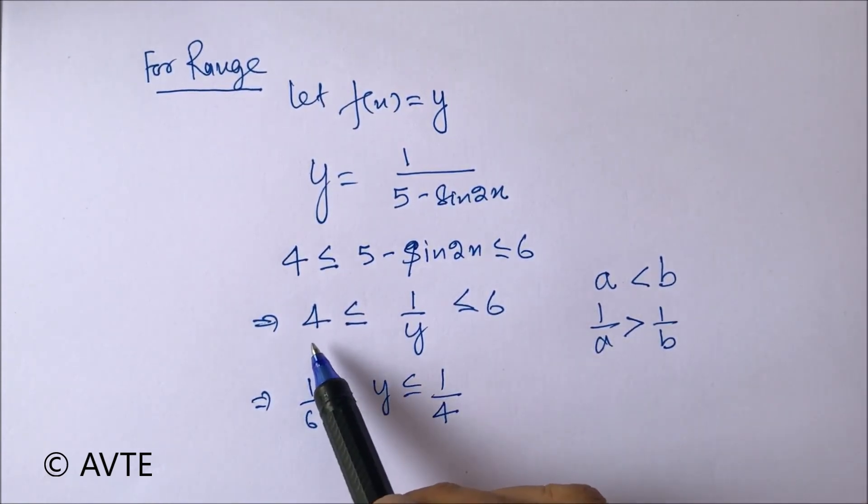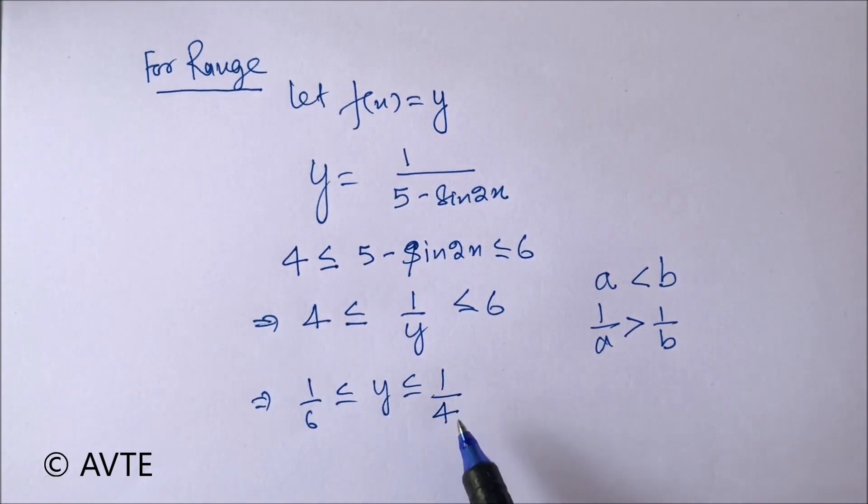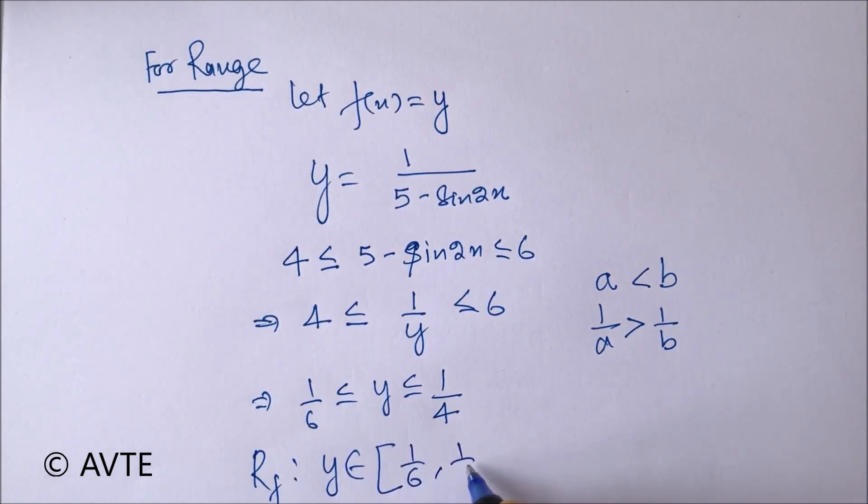Because six is more than four, but one by six will be less than one by four. So the range you can see is clearly closed interval of one by six to one by four.